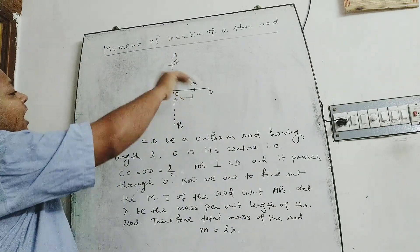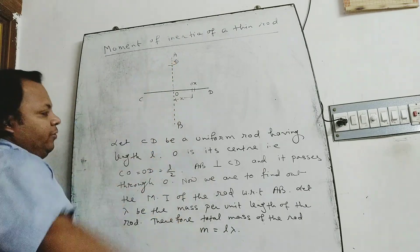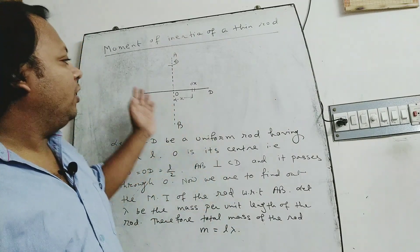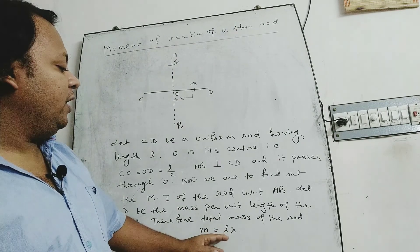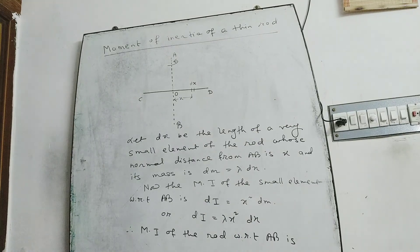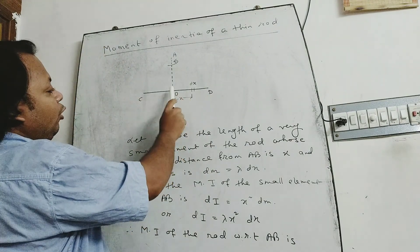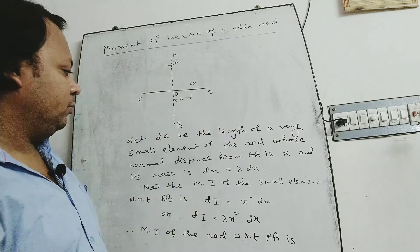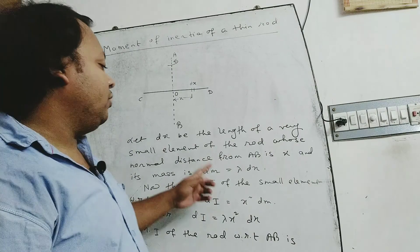Therefore, we are to find out the moment of inertia of the rod CD with respect to the axis AB. Let lambda be the mass per unit length of the rod. Therefore, total mass of the rod CD, small m, is equal to L into lambda. The mass of the small element dm is equal to lambda into dx.